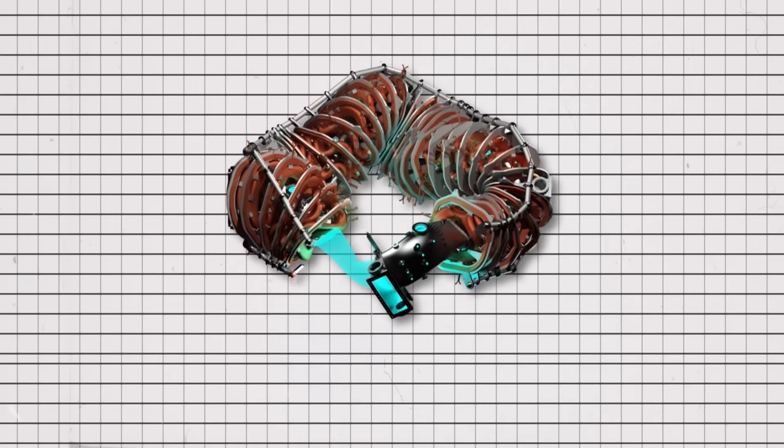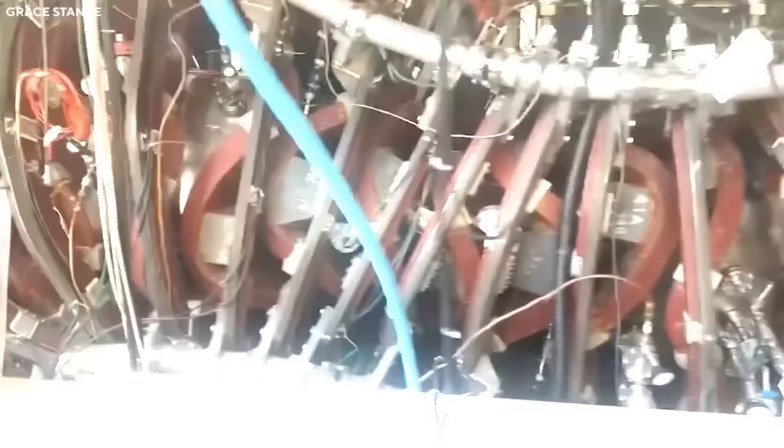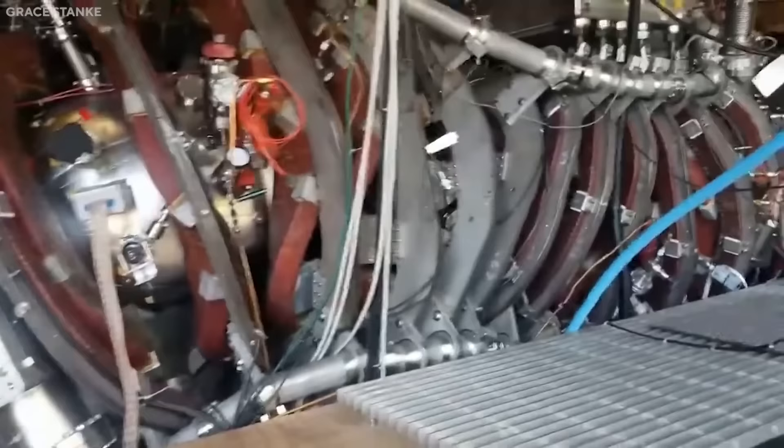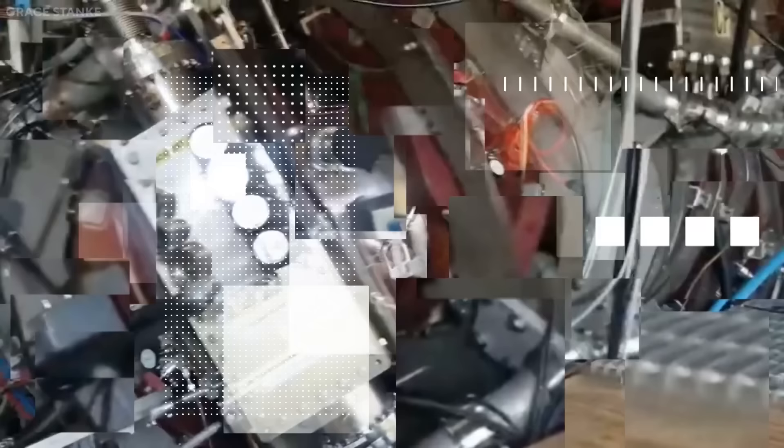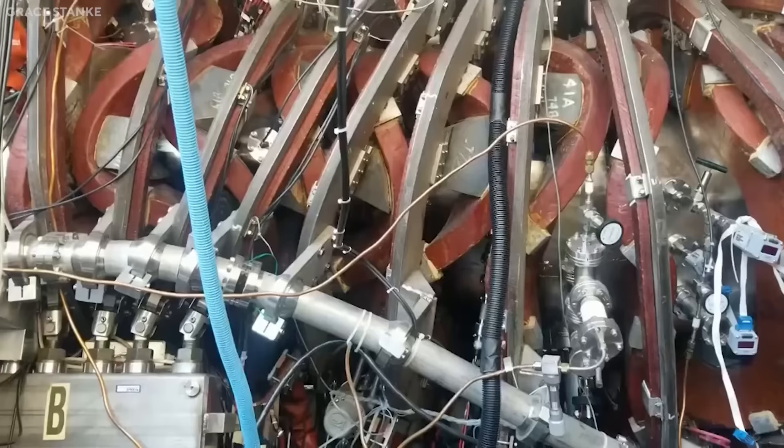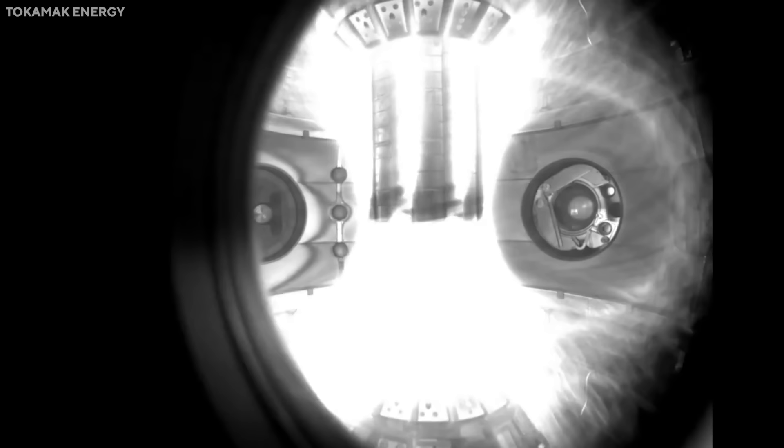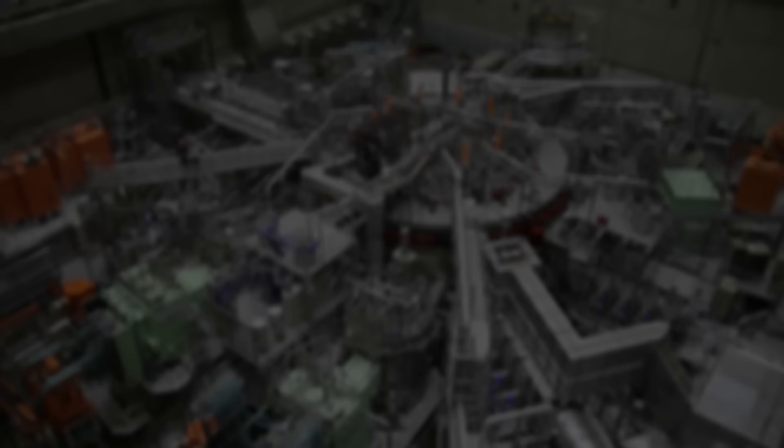Another important stellarator is the Helically Symmetric Experiment or HSX, which is the first stellarator to have a continuous helical symmetry. This means that the magnetic field strength is exactly constant along the helical field lines, which minimizes the neoclassical transport losses. HSX has a modular coil design, which allows for more flexibility and control over the magnetic configuration. HSX aims to explore the effects of helical symmetry on plasma turbulence, transport, and stability.